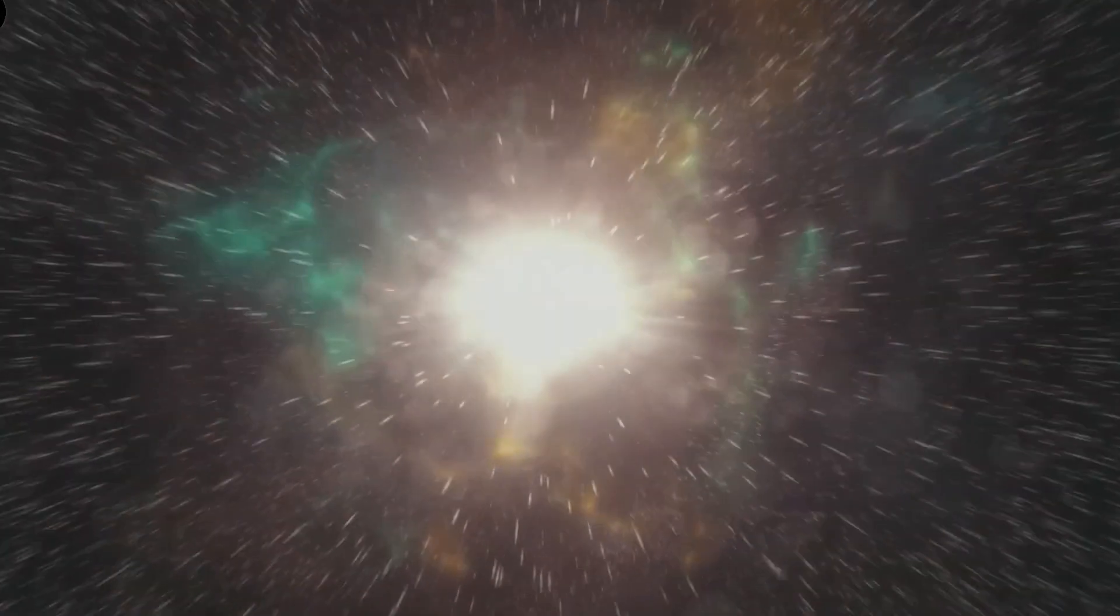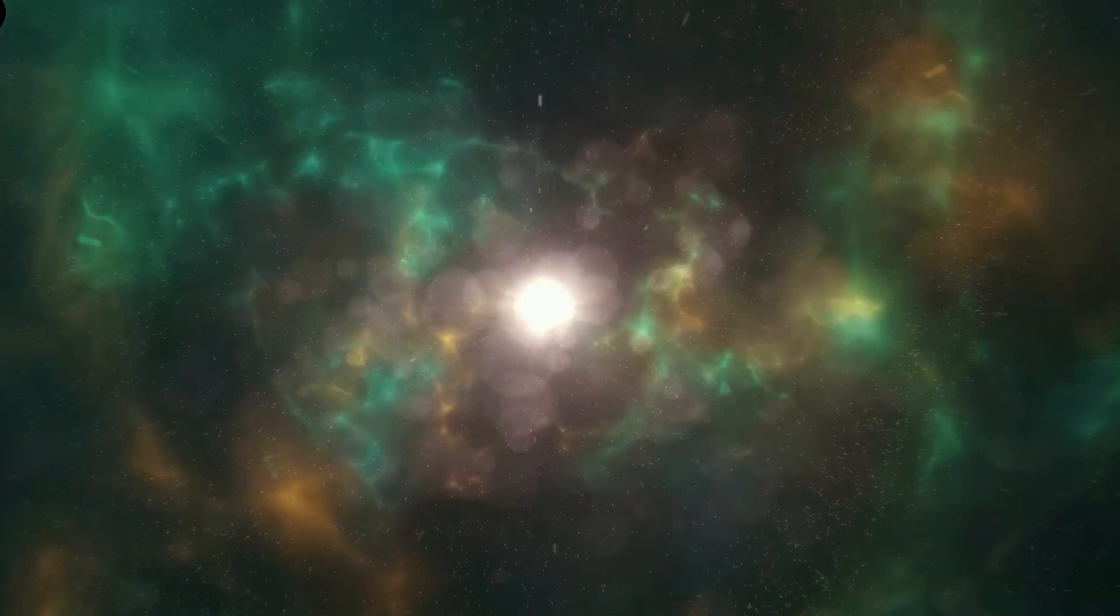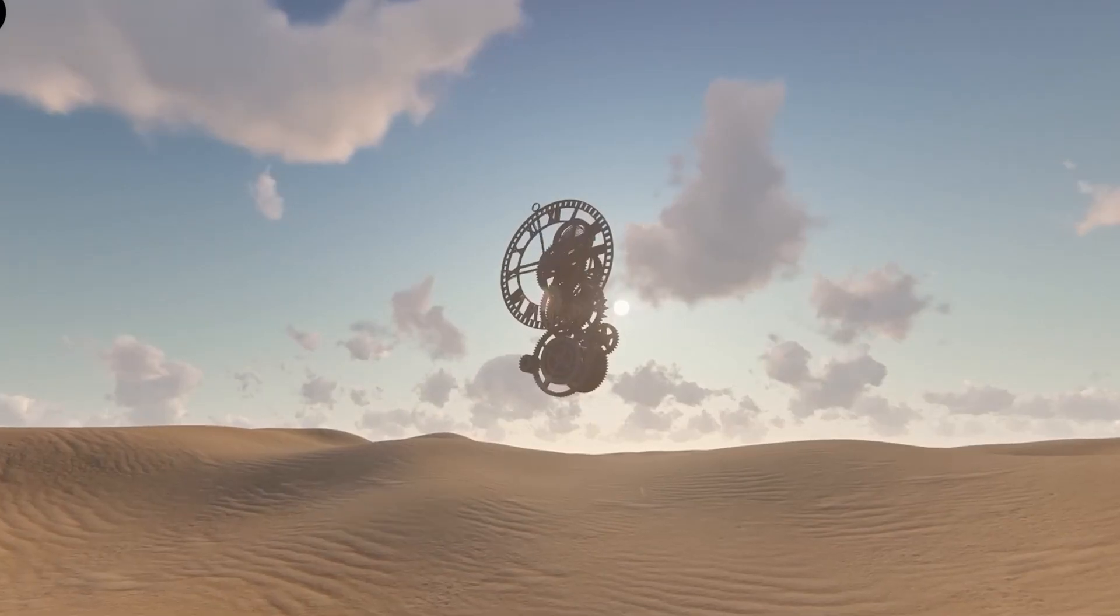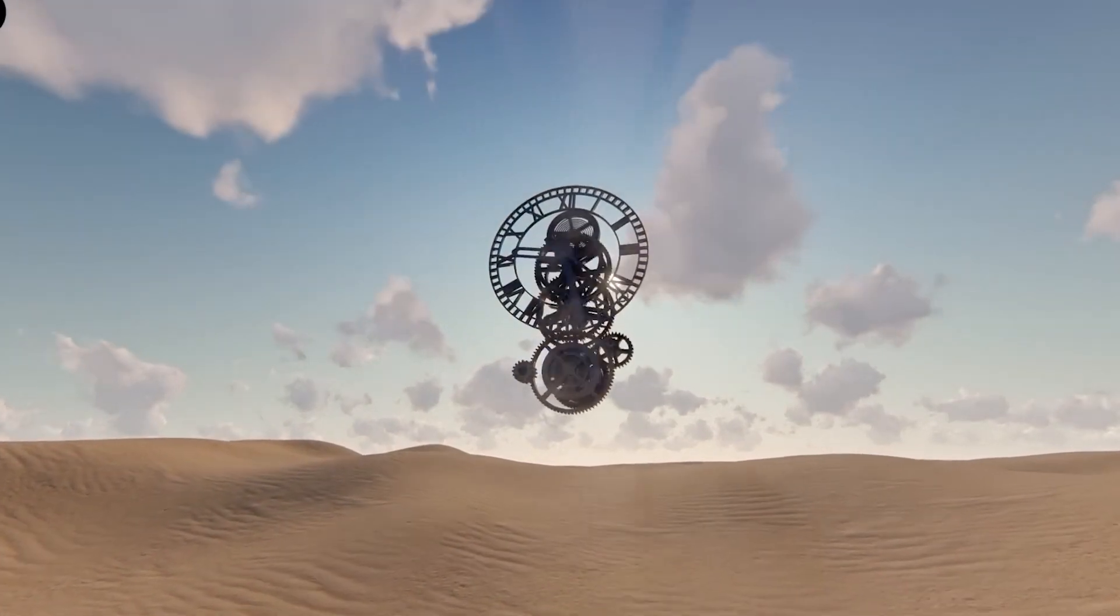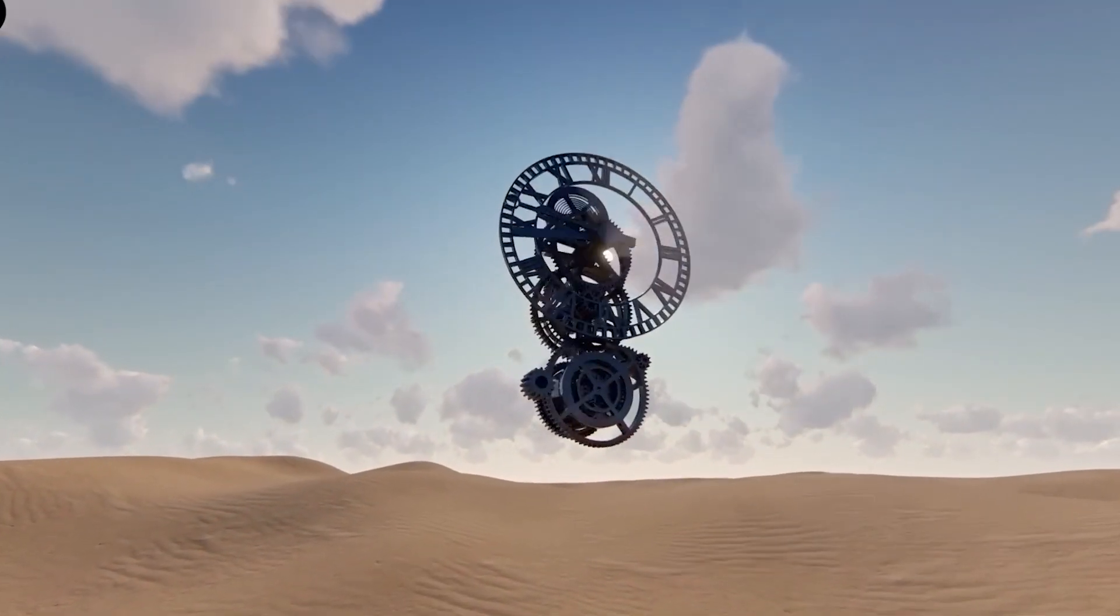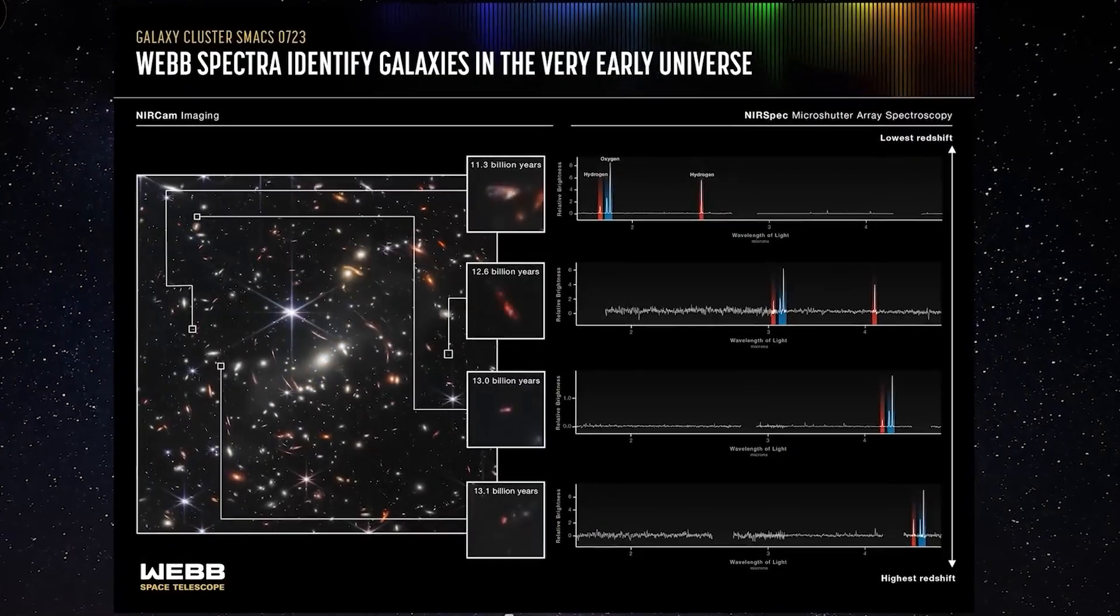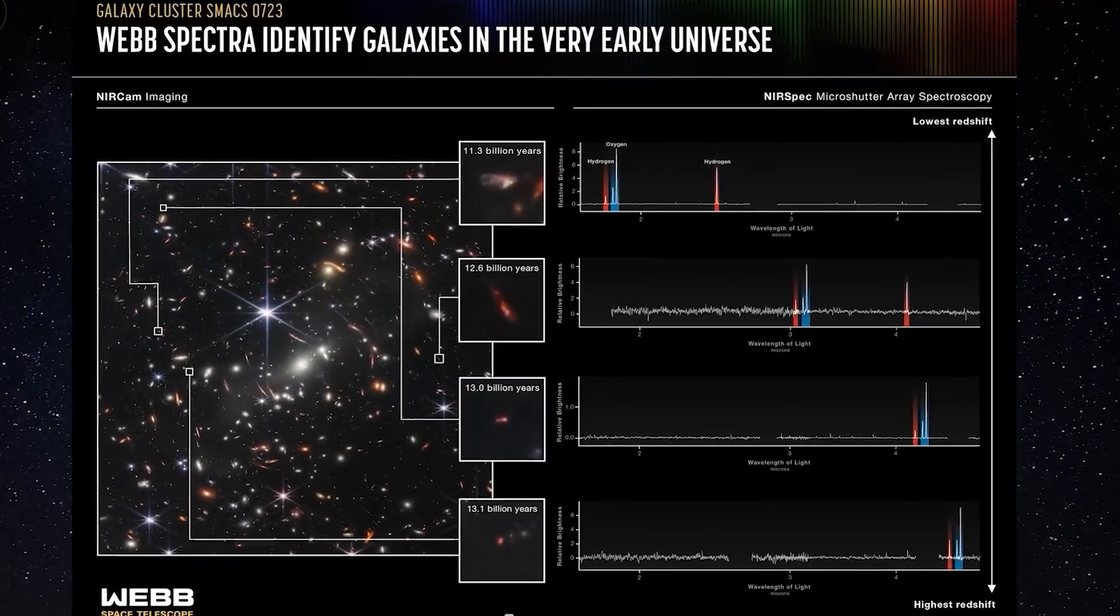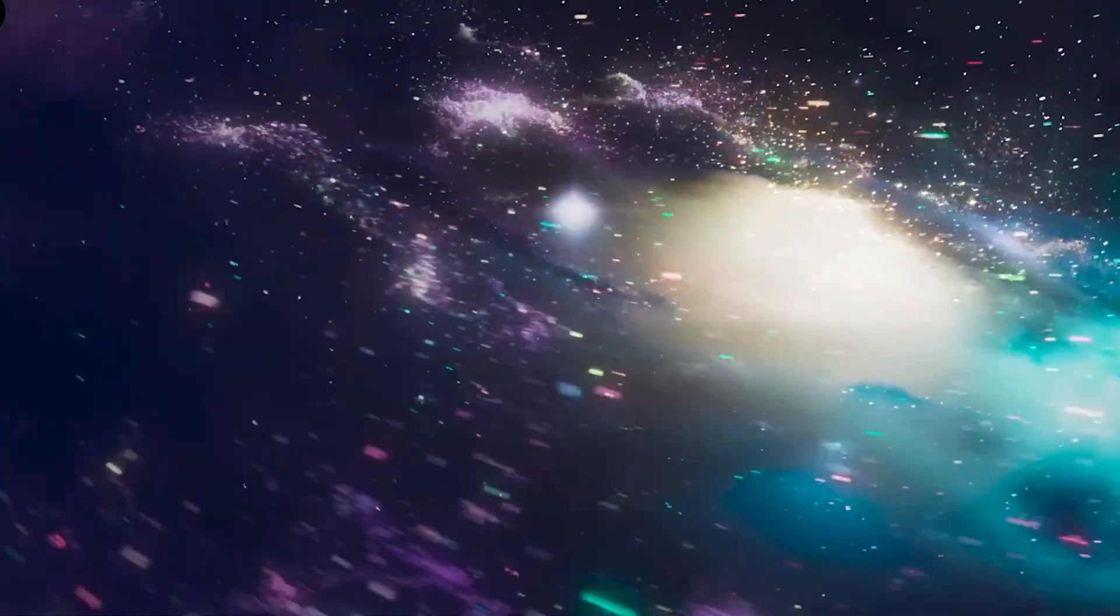What might be happening? Dark matter, which makes up a big part of the universe and is still a mystery, is one possible cause. Even though scientists still don't know a lot about dark matter, they think it is a key part of how galaxies form. When dark matter clumps into a halo, it pulls in gas from the rest of the universe, which then makes a galaxy and its stars.